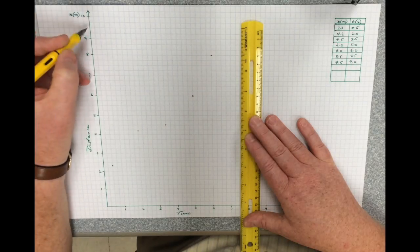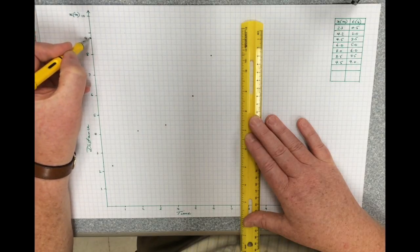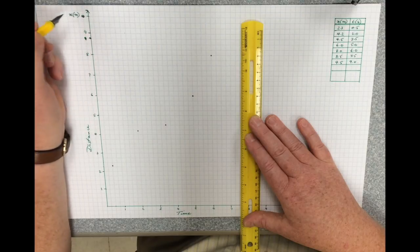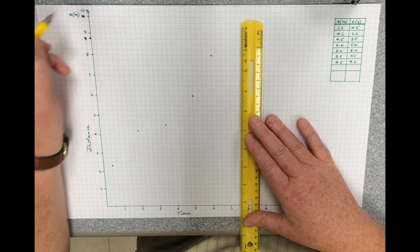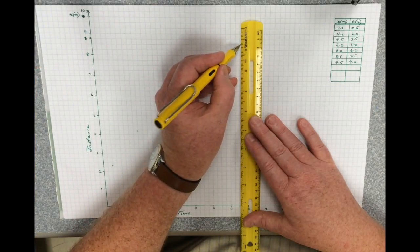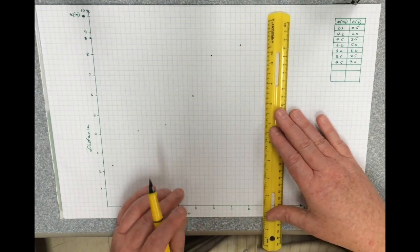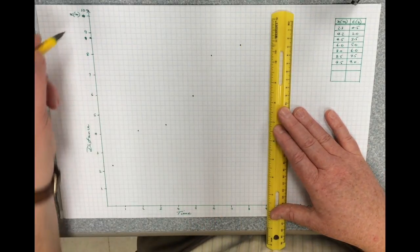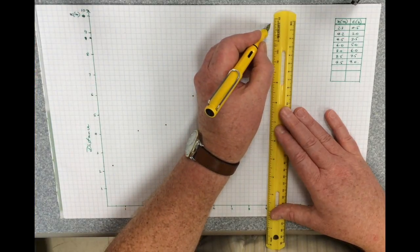Next one is at 7.5 and 8.5. 8.5, oh I made a mistake here. That one should be up there and this one should be up here. 8.5 is over here, 7.5, 8.5, and I want 9 and 9.5 which is going to be over here.